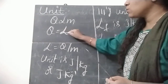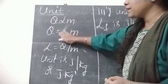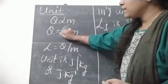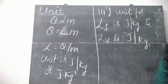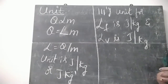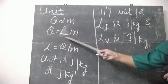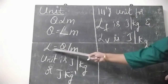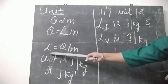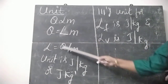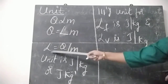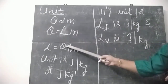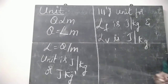Removing the proportionality sign and introducing a constant, that constant is denoted by capital L, called latent heat. So we can write: L is equal to Q divided by M.